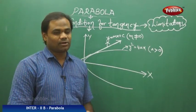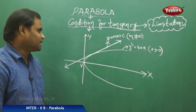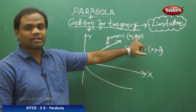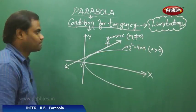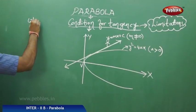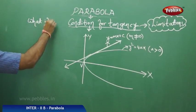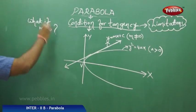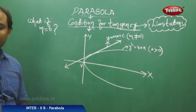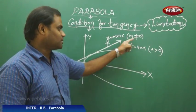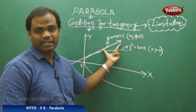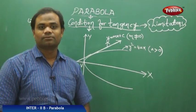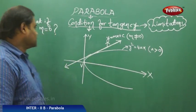Now let's see the limitations of the tangent. As we have seen clearly here, I have taken the tangent with restrictions that slope is not equal to 0. The question comes here: what if m is equal to 0? So what happens when the slope is 0? Why can't I accept m equal to 0 for this line to be a tangent to the parabola in the condition for tangency? Let's see.